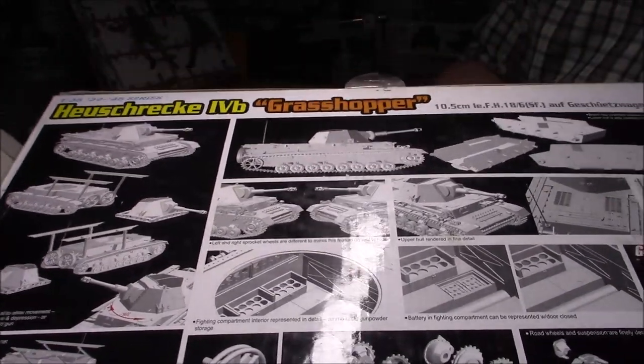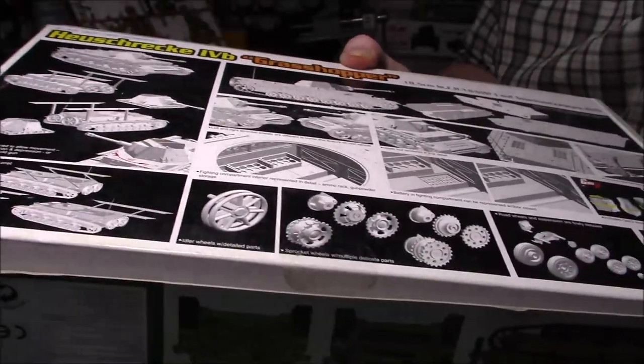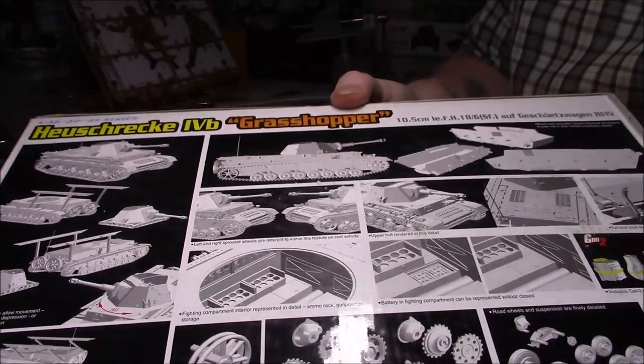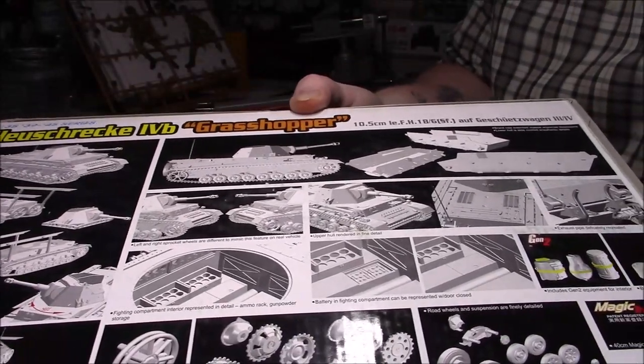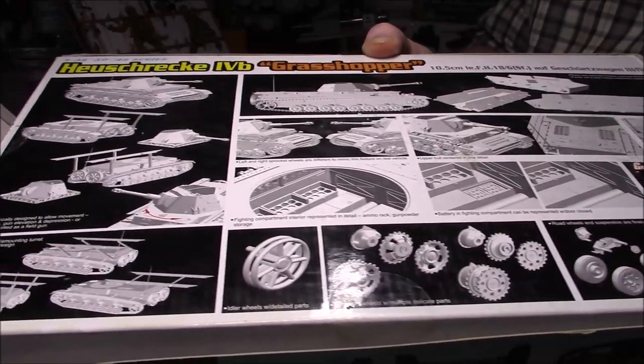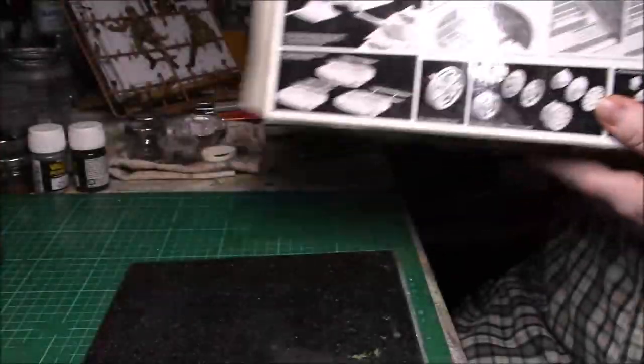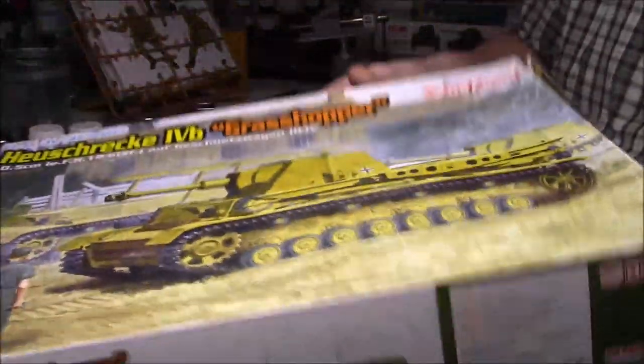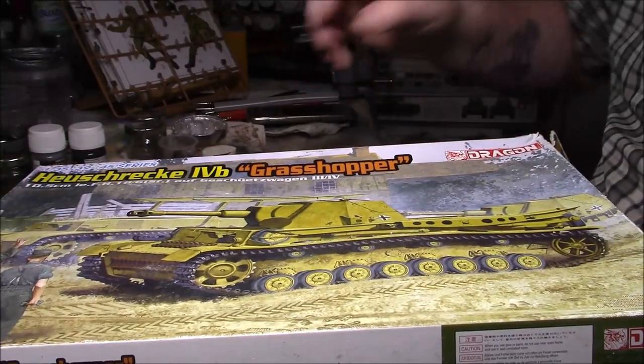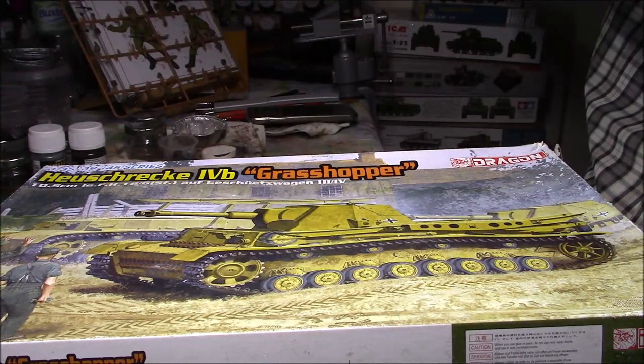On the back we have the typical CAD drawings that Dragon do. Nice interior. Plenty of CAD drawings. It looks quite nice and detailed, typical stuff. Let's have a look in the box. The box was tattered when I bought it from the second hand store, but everything's in there.